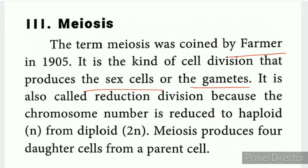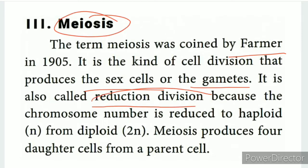Meiosis is also known as reduction division. It involves reduction division, producing haploid cells. The parent cell has the diploid chromosome number (2n), and through meiosis it produces cells with the haploid number (n).